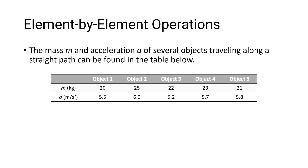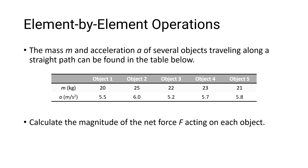Let's take a look at our first example problem. We are told the mass and acceleration of several objects traveling along a straight path can be found in the table below, and we want to calculate the magnitude of the net force acting on each object, using Newton's second law where the force is equal to mass multiplied by acceleration.